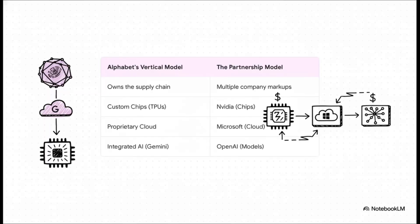Right now, there are basically two competing models in the AI world. On one side, you've got Alphabet's vertical model, where it owns everything from its own TPU chips to its cloud to its AI. But on the other side, you've got the partnership model, where, say, NVIDIA makes the chips, Microsoft provides the cloud, and OpenAI builds the models.